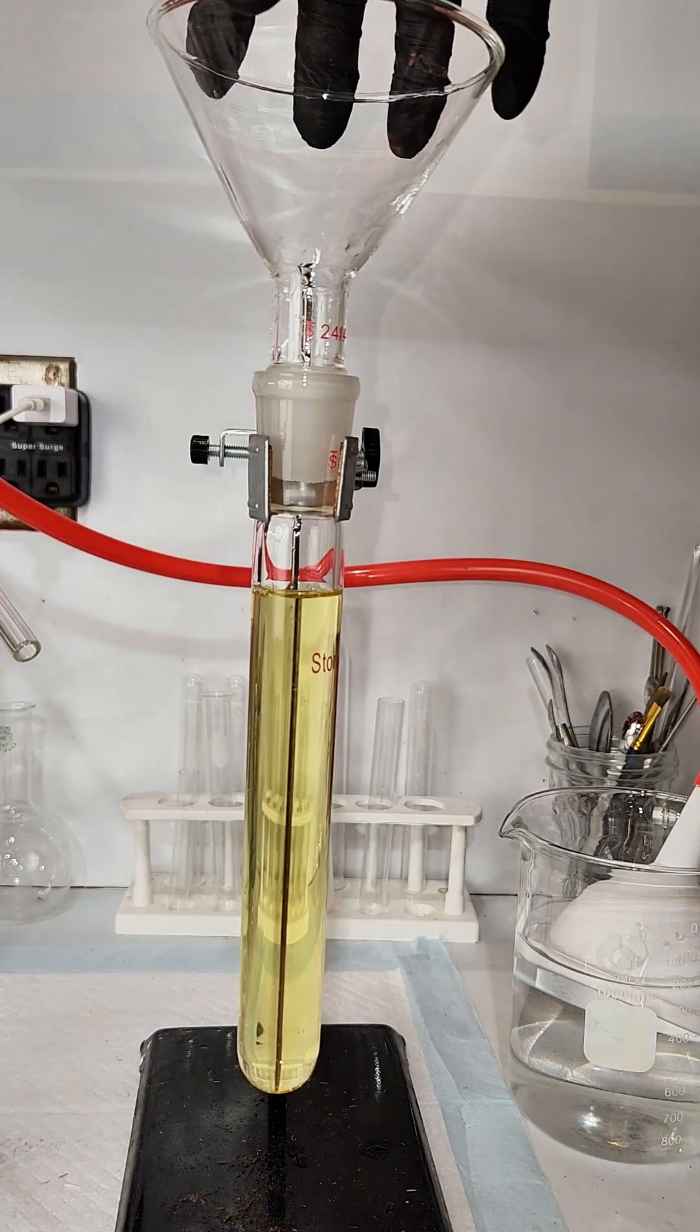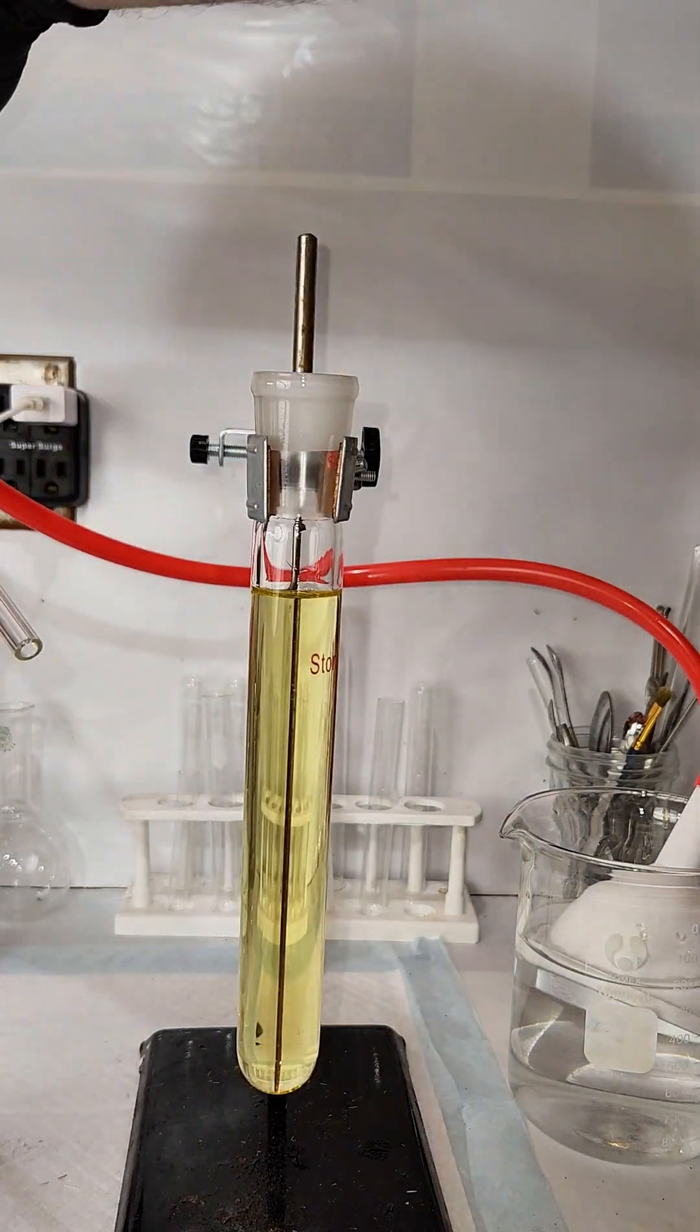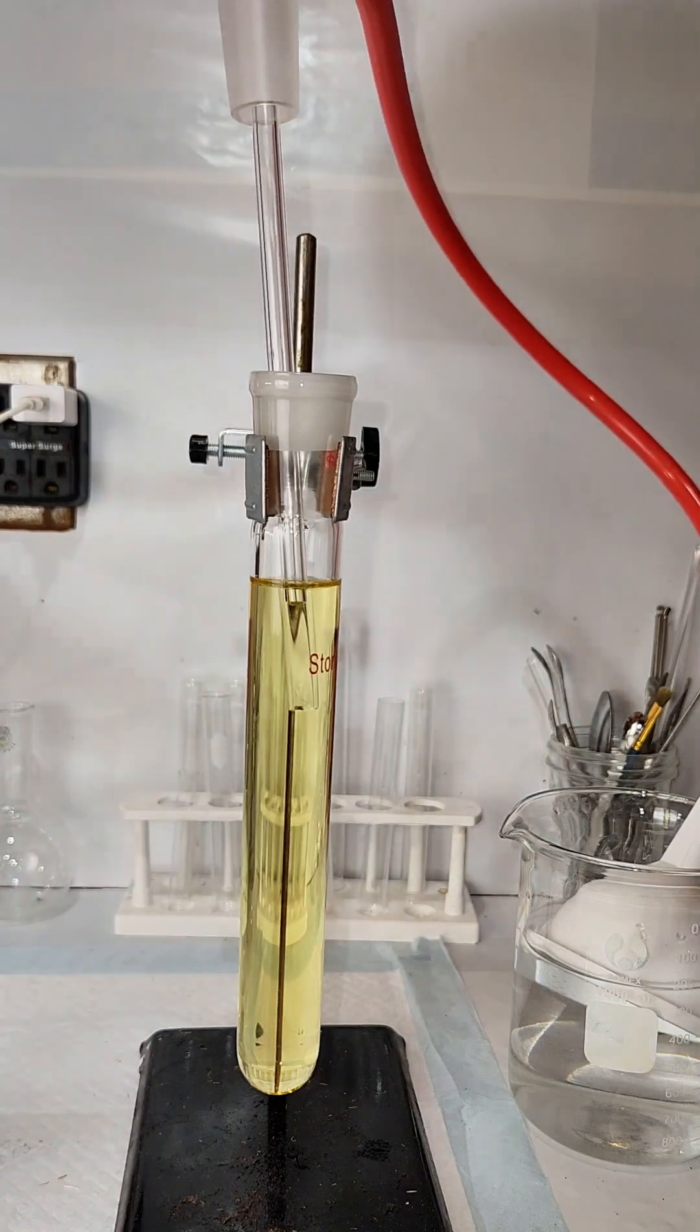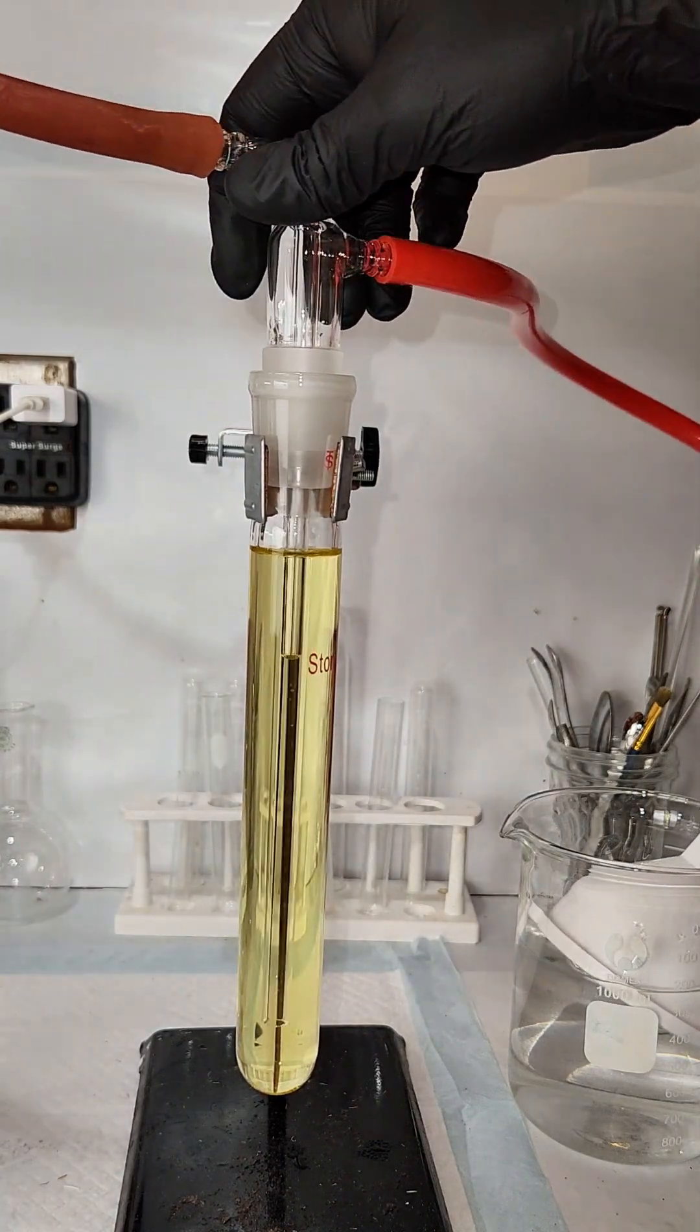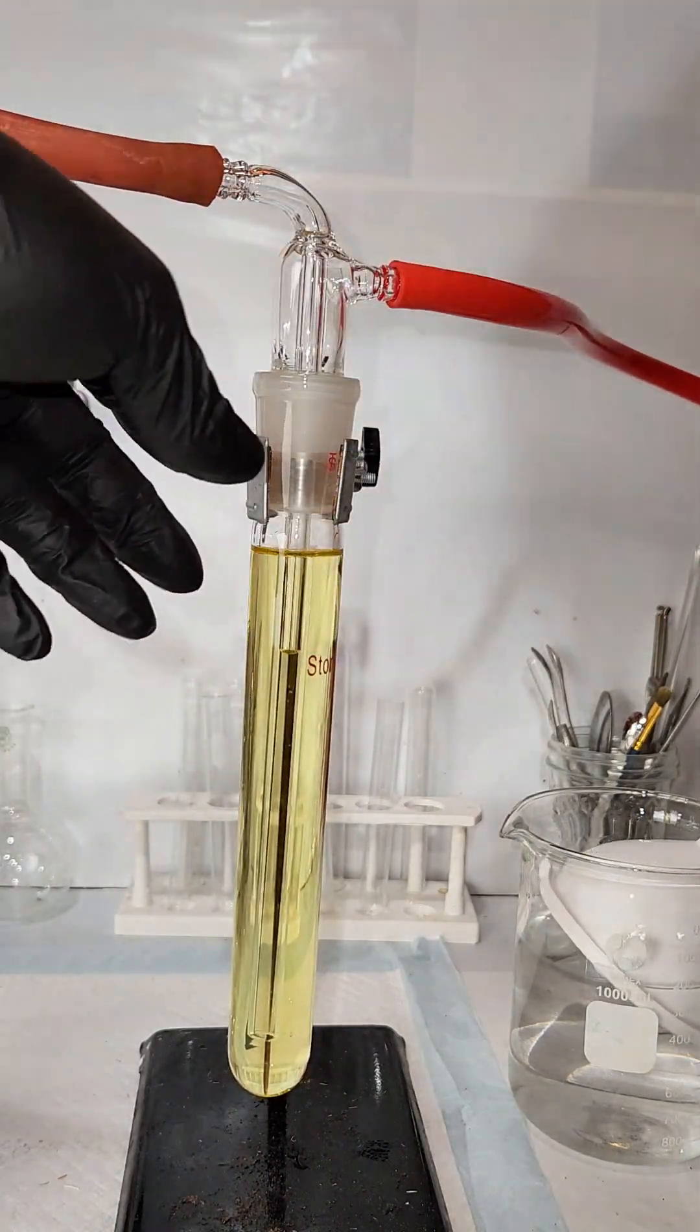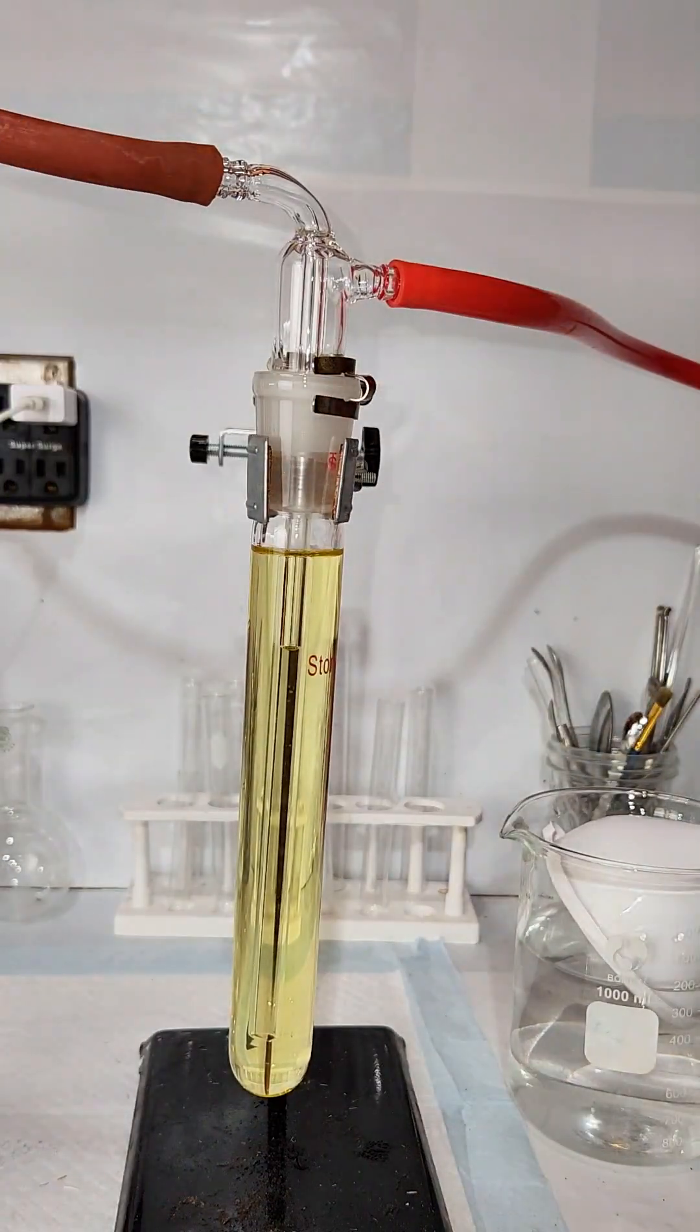to make ferricyanide from ferrocyanide, I begin by making a saturated solution of potassium ferrocyanide and add it to this cold trap. I typically use this piece to dry gases, and I'm only doing the reaction in it because it looks cool on video.